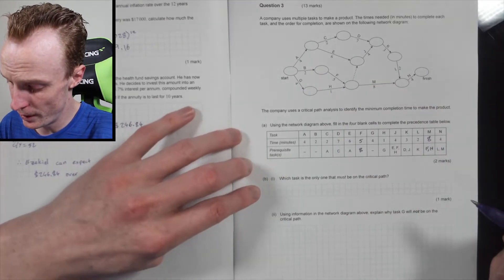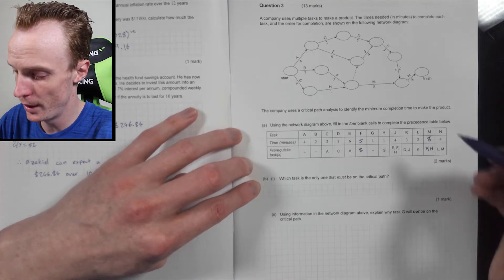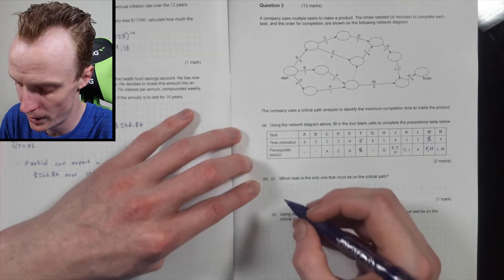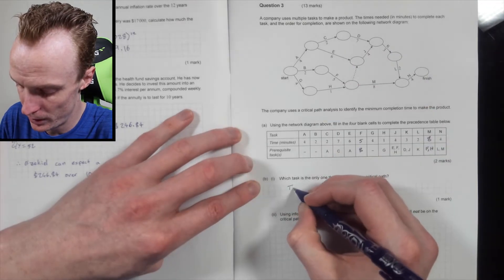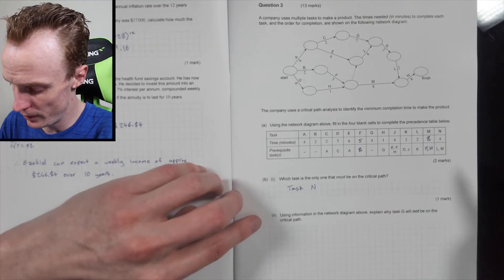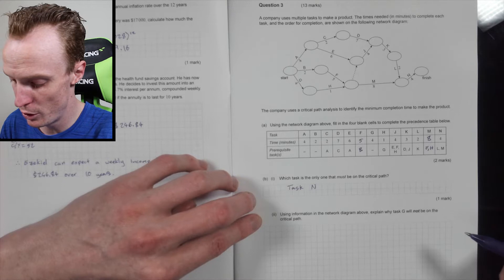Which task is the only one that must be on the critical path? Well, that has to be task N, because task N has to be done to complete it and it hasn't got any other alternative pathway. So this will just be task N. Using the information on the network diagram below, explain why task G will not be on the critical path.